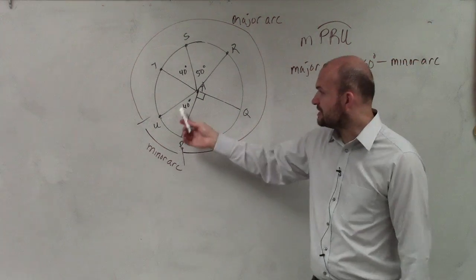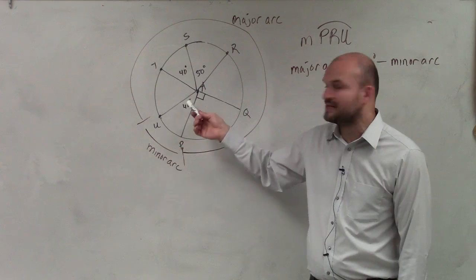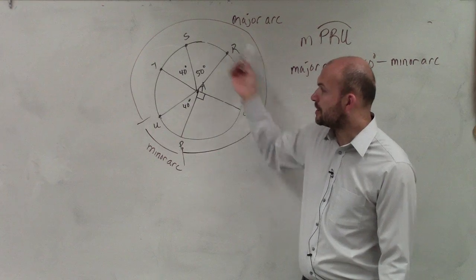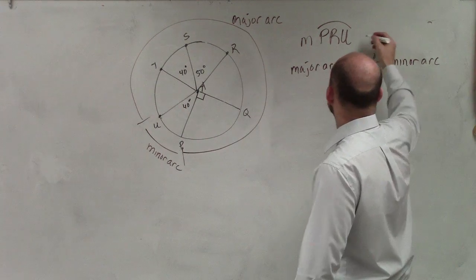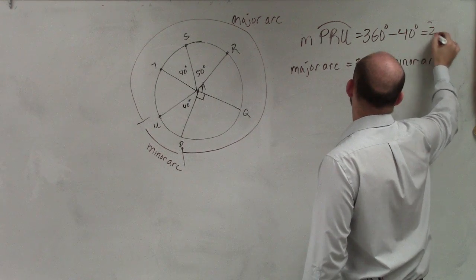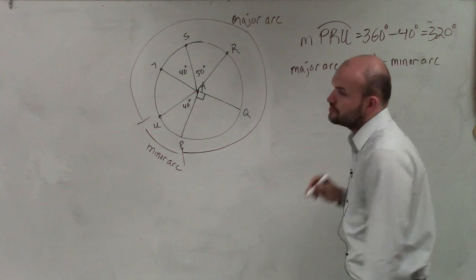We look at our minor arc and say, the minor arc is the same measurement as the central angle, which is 40 degrees. So to find the major arc, which is the rest of it, I'm simply going to take 360 degrees and subtract 40 degrees, which is 320 degrees.